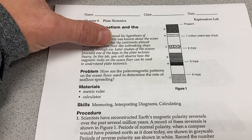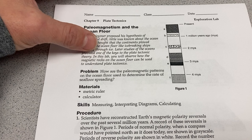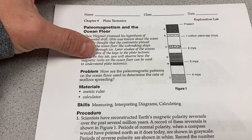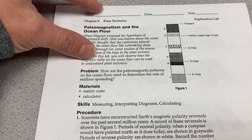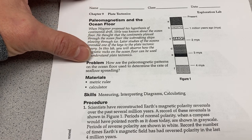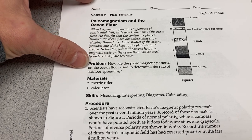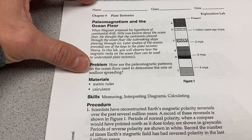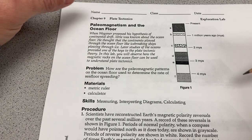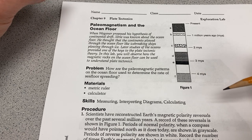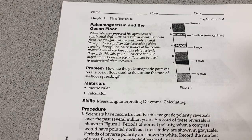Later studies of the oceans provided one of the keys to the plate tectonic theory. In this lab, you'll observe how the magnetic rocks on the ocean floor can be used to understand plate tectonics. The problem we're looking at is how the paleomagnetic patterns on the ocean floor are used to determine the rate of seafloor spreading. Essentially, how we discovered this was by dragging magnetometers behind ships across the mid-oceanic ridges.